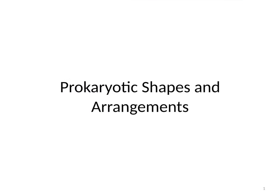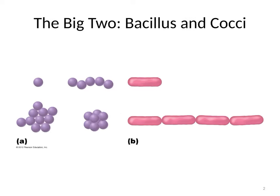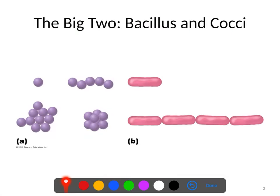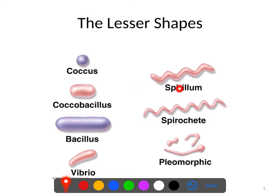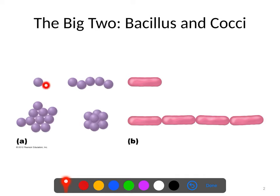Let's take a look at the various shapes and arrangements that you'll find bacterial cells in. The vast majority of bacterial cells are going to be either little dots or little rods. Little dots are called cocci and they're usually spherical, and the rods are called bacilli. Those aren't the only forms bacteria can come in — they're just the most common.